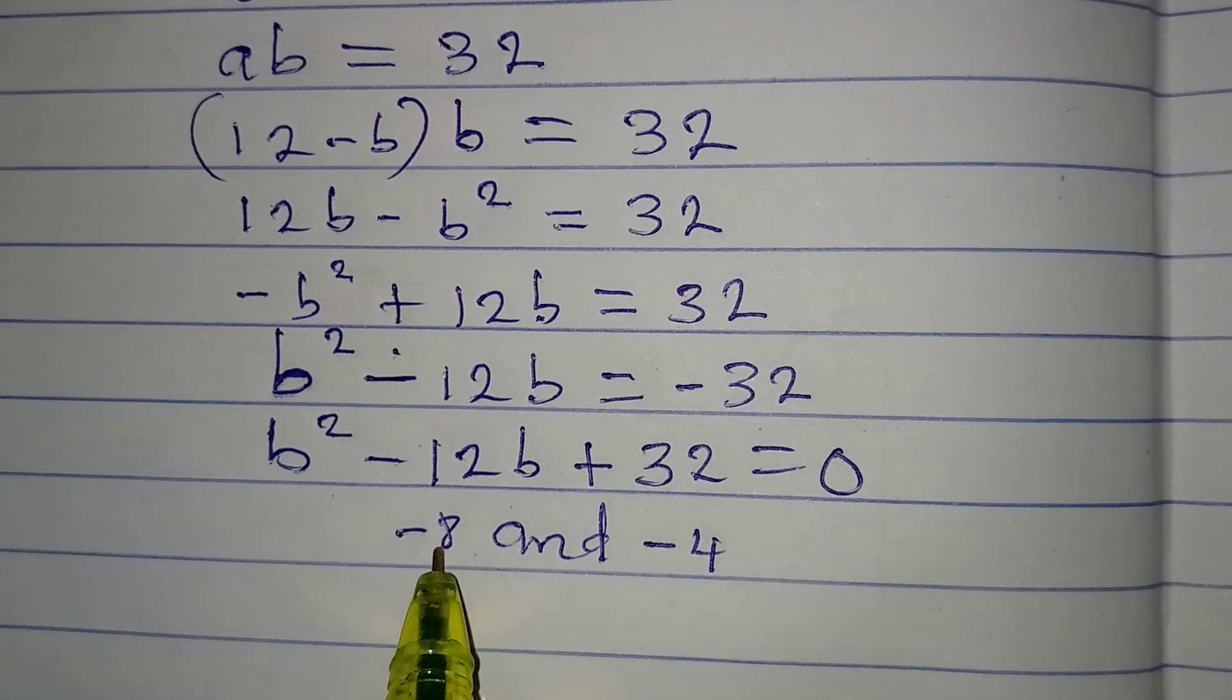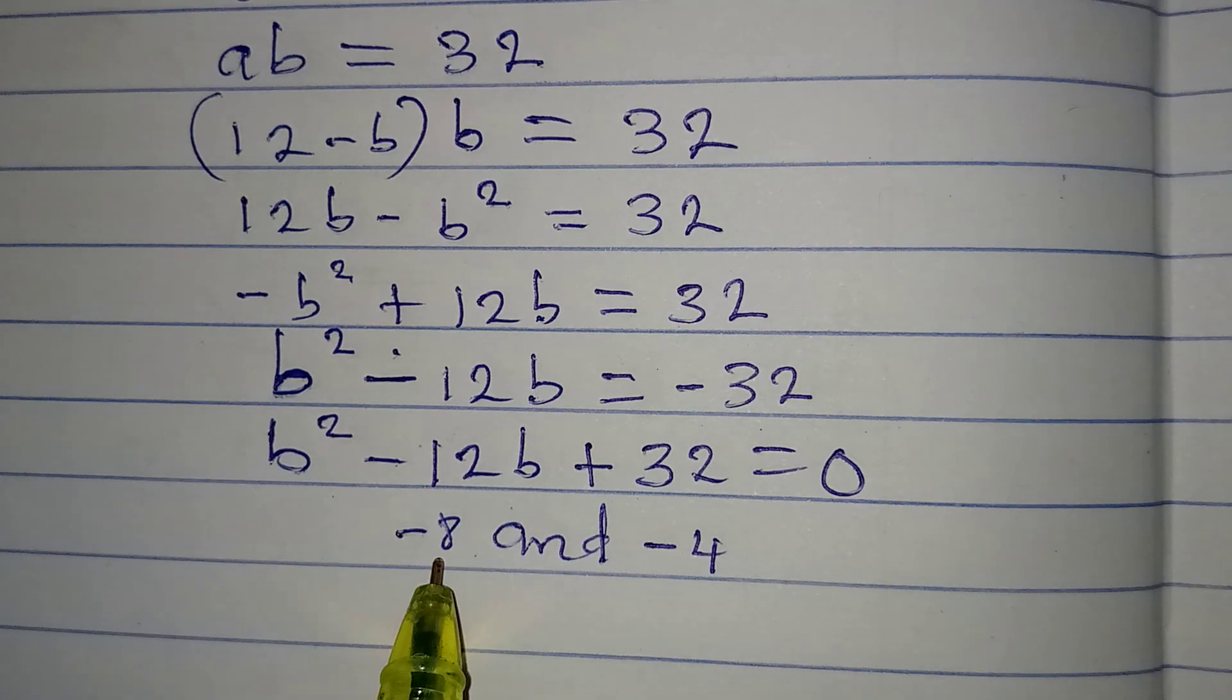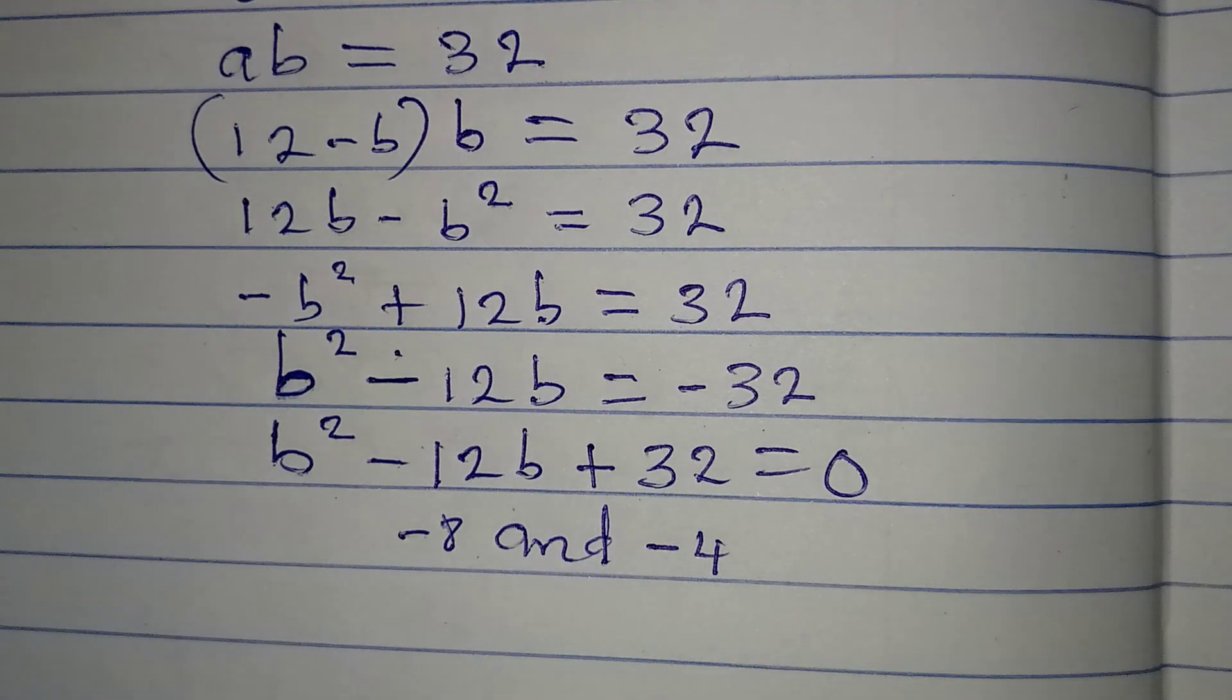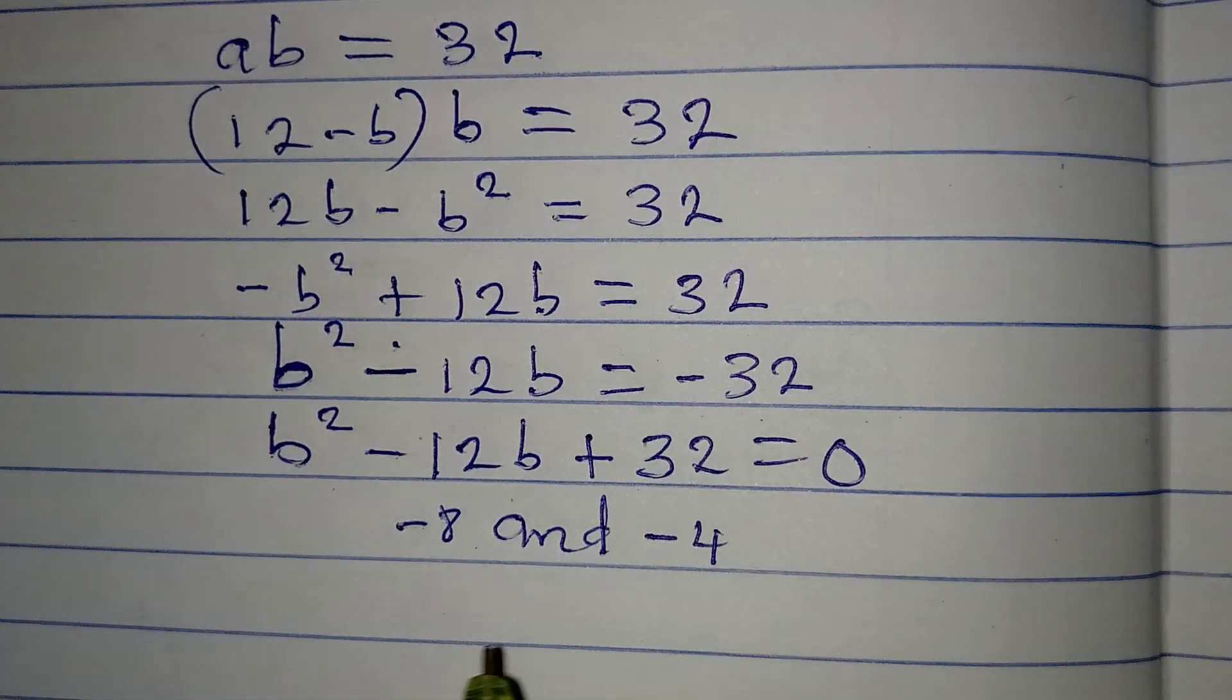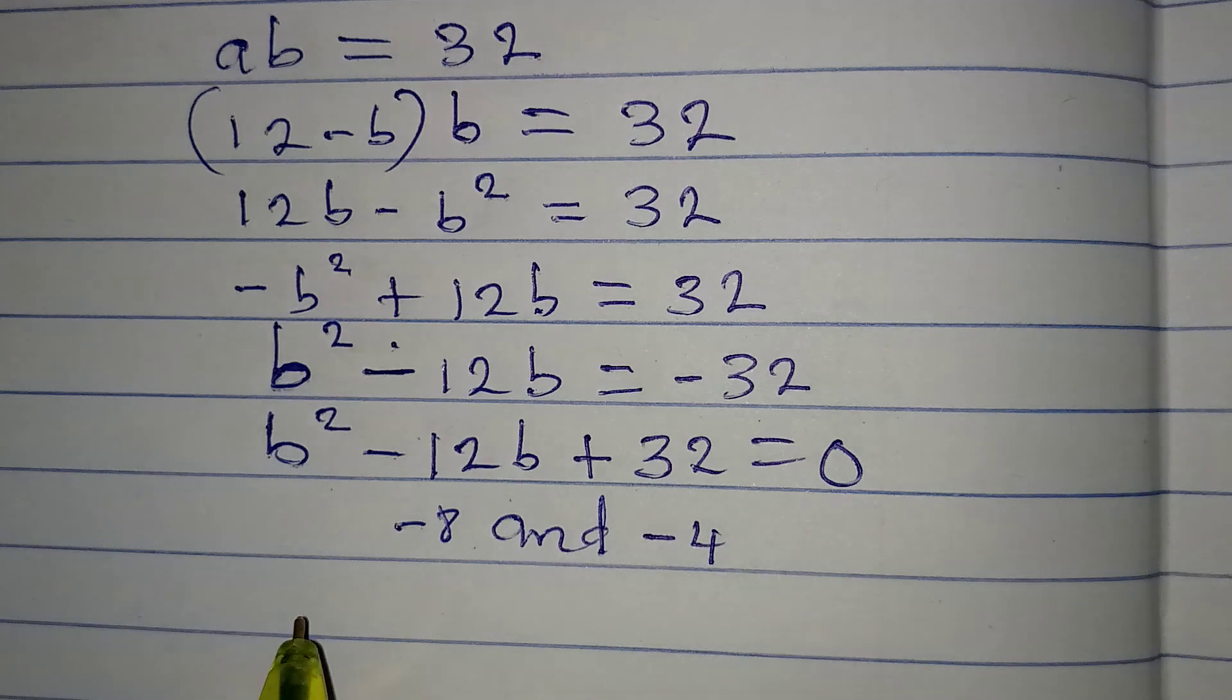Because minus 8 minus 4 is minus 12, and minus 8 times minus 4 is plus 32. Now this means that we can just go ahead.